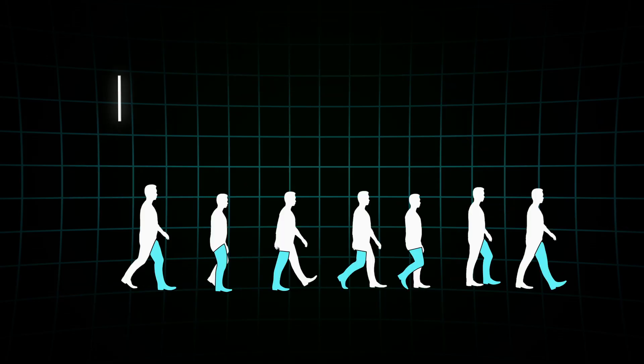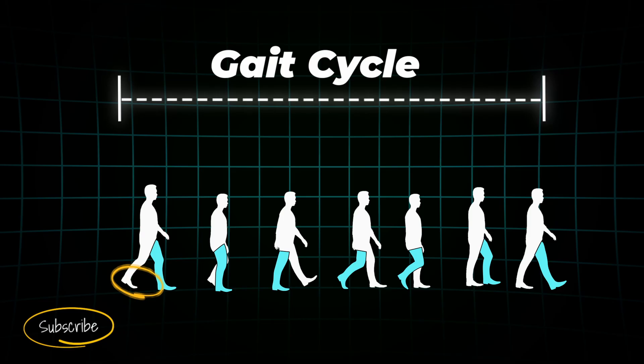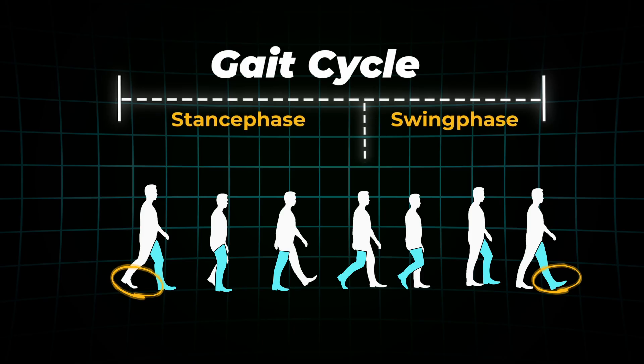A whole gait cycle is first of all defined from heel strike to heel strike of the reference leg we are looking at. First of all, we can classify the gait cycle whether the leg has ground contact or not. At normal walking speeds, the stance phase accounts for 60% and the swing phase for 40% of the gait cycle.